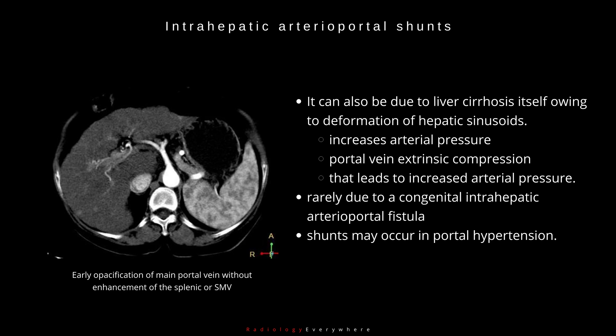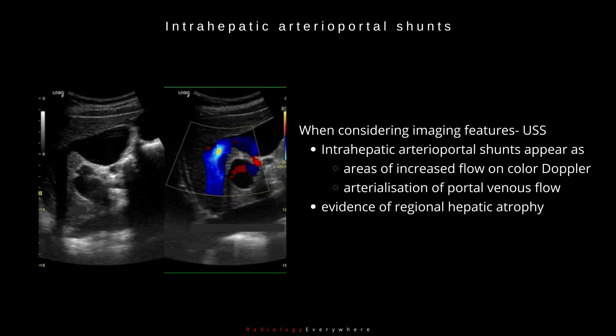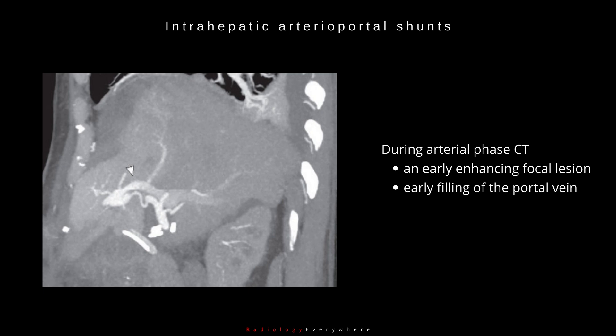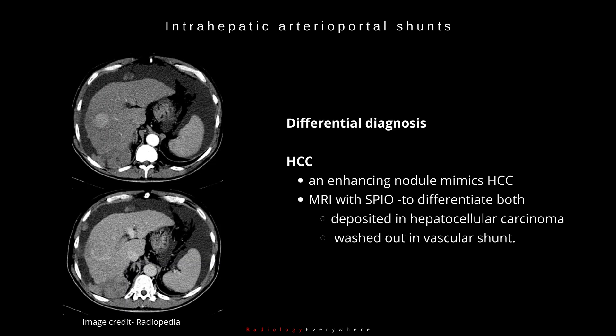In addition, shunts occur in portal hypertension. When considering imaging features, intrahepatic arterioportal shunts appear as areas of increased flow on color Doppler, and arterialization of portal venous flow occurs with large shunts. There may be evidence of regional hepatic atrophy due to the shunt. During arterial phase CT, there is an early enhancing focal lesion along with early filling of the portal vein.